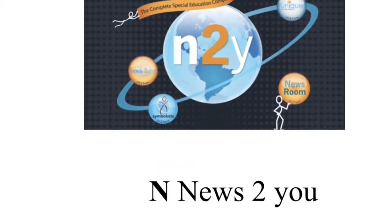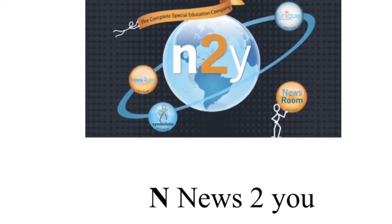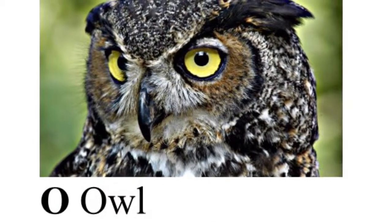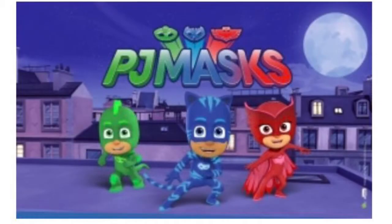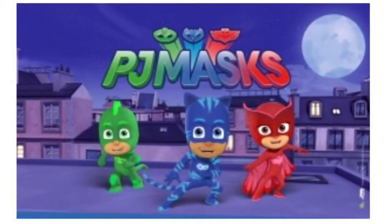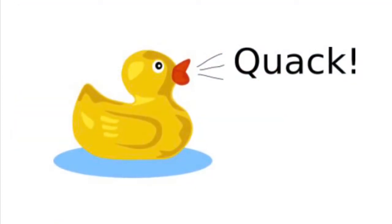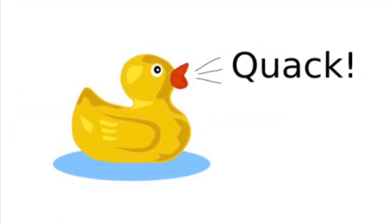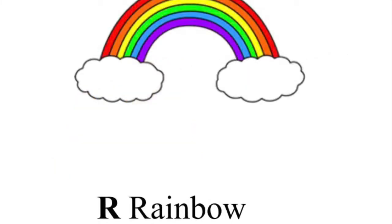N is for News to U. O is for Owl. P is for PJ Masks. Q is for Quack Quack, Quack Quack. R is for Rainbow.